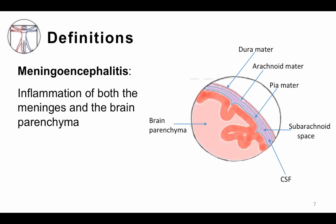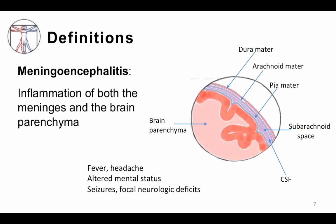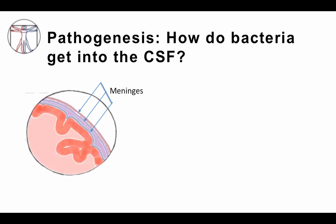Most commonly, patients present with meningoencephalitis, where you have inflammation of both the meninges and the brain parenchyma. This can start as meningitis alone and progress to involve the brain, or vice versa. These patients may have a mix of symptoms: fever, headache, altered mental status, seizures, and ultimately focal neurologic deficits.